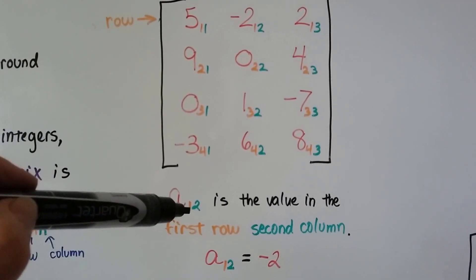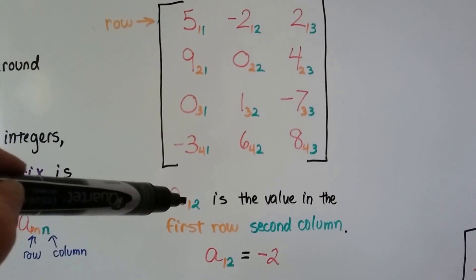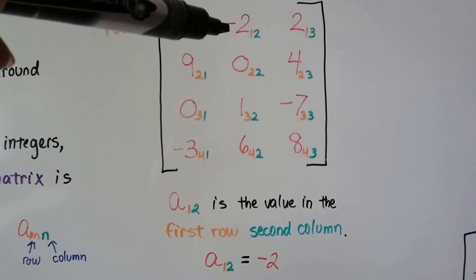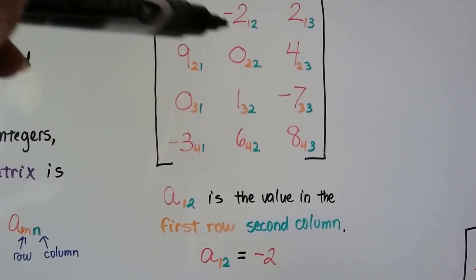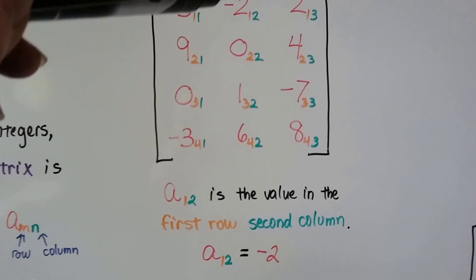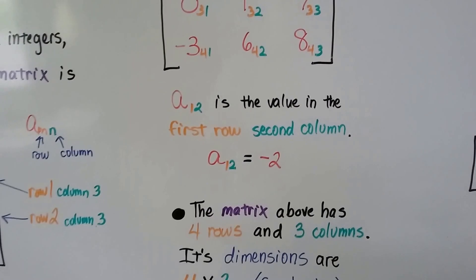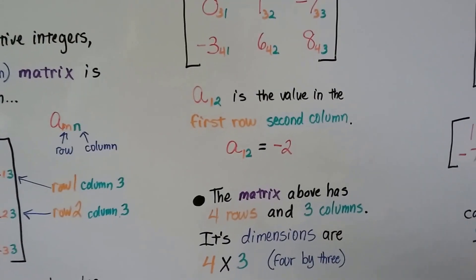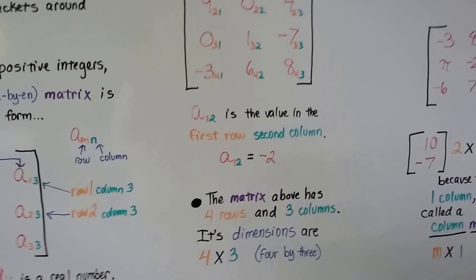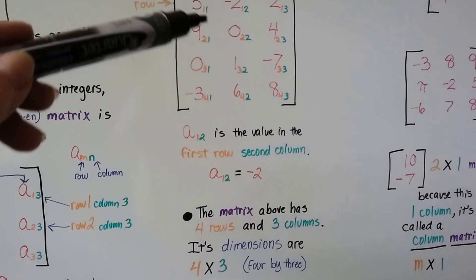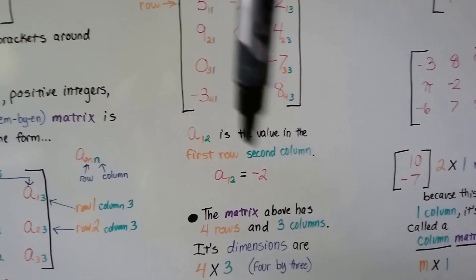Now, look at this. a sub 1, 2. So that's the first row, second column. Well, that would be this one, wouldn't it? That would be a negative 2. See, we can locate it. And the matrix above here, it has 4 rows and 3 columns. So its dimensions are 4 by 3.